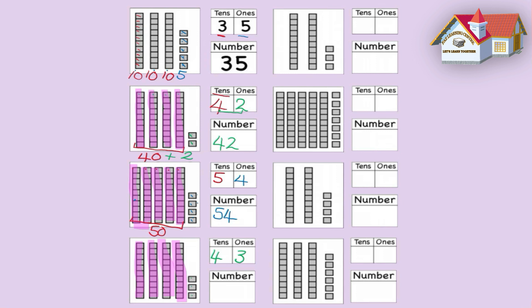We write the number exactly the way it's written as a pair — 43. We just drop the 4 and the 3 down to make 43. Let's count again making sure we count in tens and then add the ones as well: 10, 20, 30, 40, 41, 42, 43. Fantastic, and that is what we got. Well done, you all are doing so well.